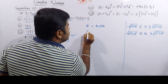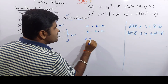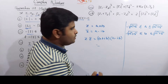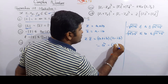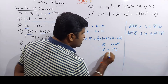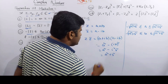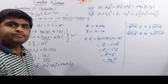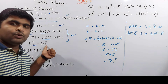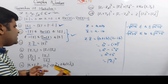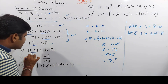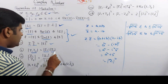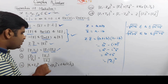If z equals a plus ib, then z-bar equals a minus ib. We multiply z into z-bar, which gives us a plus ib times a minus ib. Using the identity (a+b)(a-b), this equals a squared minus i squared b squared. Since i squared equals minus 1, this becomes a squared plus b squared. So z times z-bar equals the modulus of z squared. Therefore the modulus of z squared equals z times z-bar. Then for two complex numbers, the modulus of z1 times z2 equals the modulus of z1 times the modulus of z2.